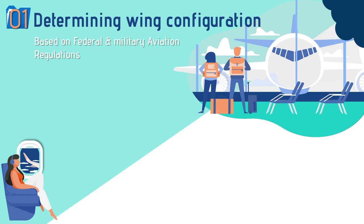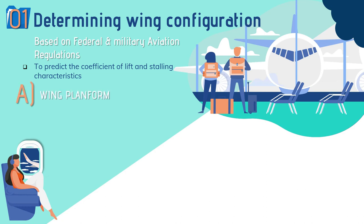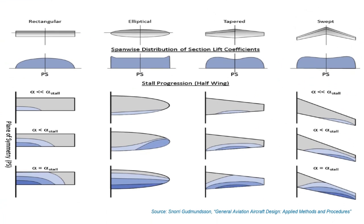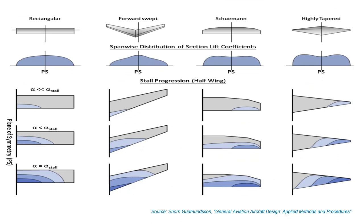Based on federal and military aviation regulations, it is highly desirable to predict the maximum lift coefficient and the stalling characteristics of any aircraft in the design phase. Starting with the selection of wing platform — it is the top-view layout or shape of the wing — which influences aerodynamic characteristics like stall progression and performance. Basically there are four platforms: rectangular, elliptical, tapered, and swept.